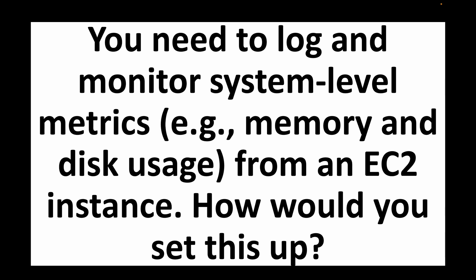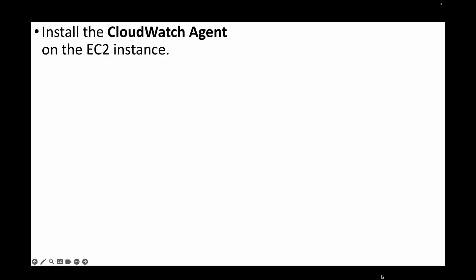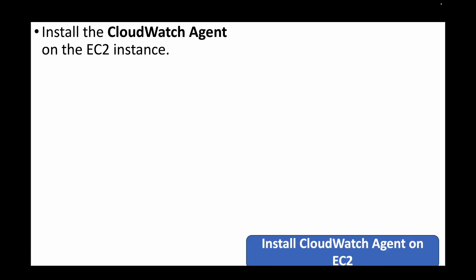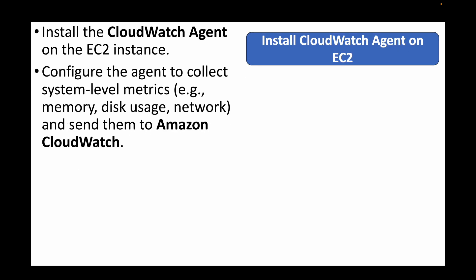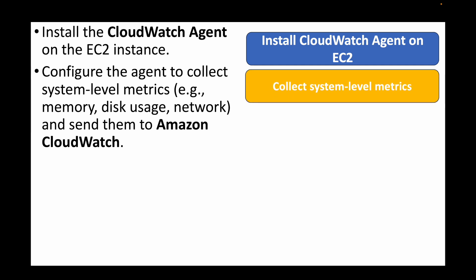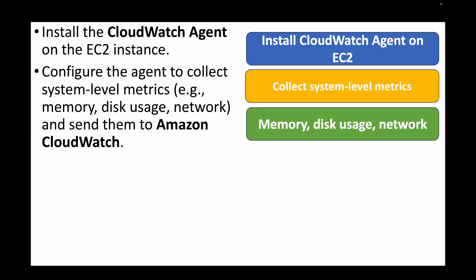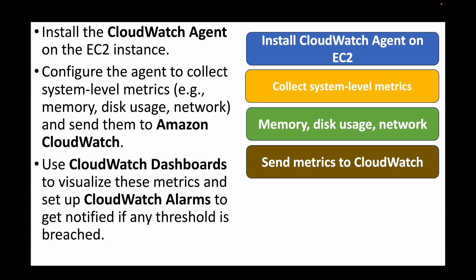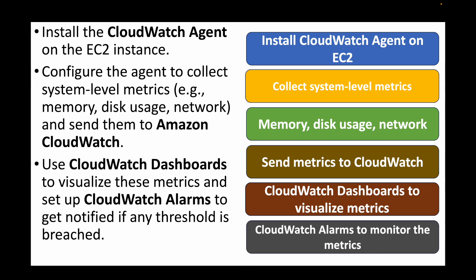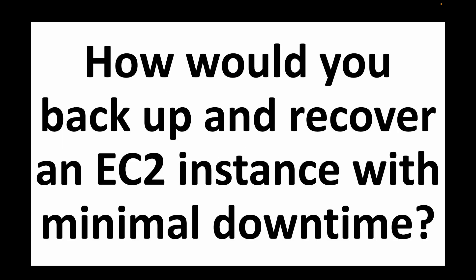The next question: you need to log and monitor system-level metrics like memory usage and disk usage from an EC2 instance — how would you set this up? We use the CloudWatch service. We install the CloudWatch agent on the EC2 instances and configure it to collect system-level metrics such as memory usage, disk usage, and network usage, then send these as logs to Amazon CloudWatch. We can use CloudWatch dashboards to visualize these metrics and set up CloudWatch alarms to get notifications or take actions when a threshold is breached.